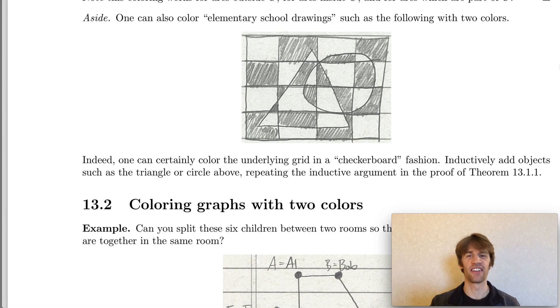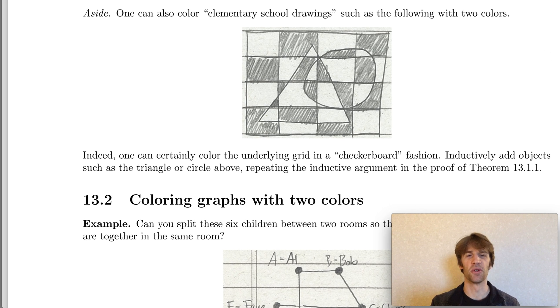Let me end this section with an aside. In elementary school we would draw checkerboard patterns like this, and then on top of this draw shapes like circles and triangles and rectangles, and then color these pictures as you see here in this sort of fashion that creates a 3D effect. It looks like the circle is on top of the triangle which is on top of the underlying checkerboard grid.